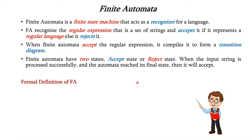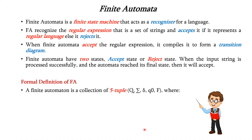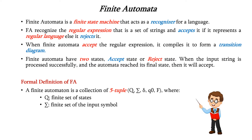Now we will see the formal definition of finite automata. It is a collection of five tuples: Q, Sigma, Delta, Q0, and F. Where Q represents the finite set of states, Sigma represents the finite set of input symbols, Q0 is the initial state, F is the final state, and Delta is the transition function.